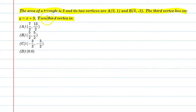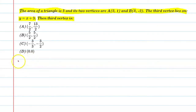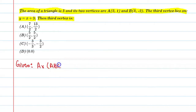So what does this mean? The area of triangle is given which is 5 square units, and its two vertices A and B are given. We need to find the third vertex which lies on the line. Let's start. Given: area of triangle ABC is 5 square units.